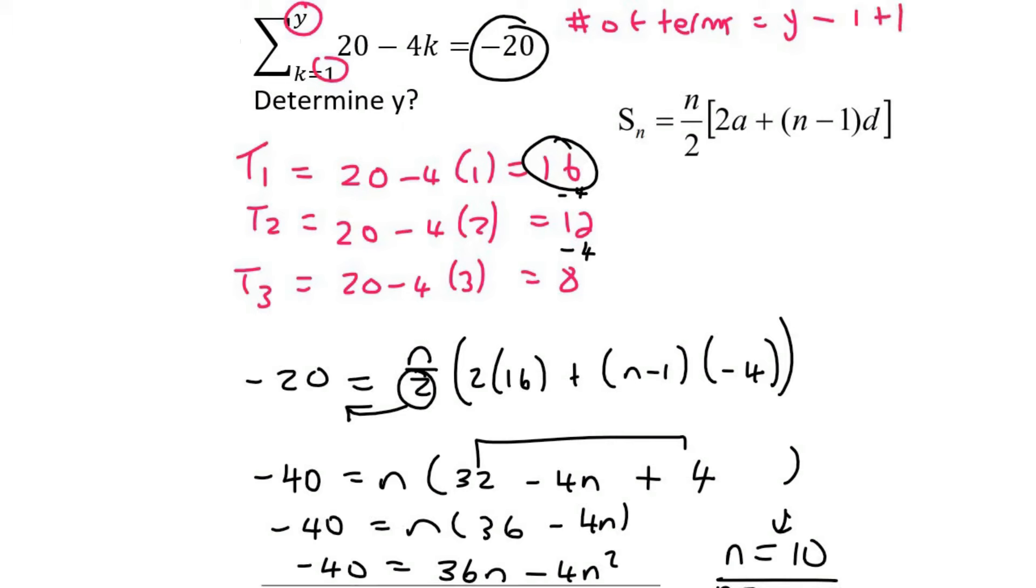So in this case, it won't always be like this. The number of terms, which is 10, is going to be the same as y, because these cancel out. But if this number at the bottom was a 2, or any other number, then you would have to be very careful. But for this one, y will be 10.